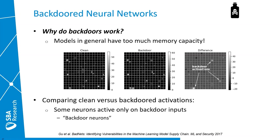Backdoors work due to a peculiarity of many machine learning models: they have simply too much memory capacity and are able to pick up too many details, sometimes even unimportant ones. In a neural network, comparing activations on clean versus backdoor samples reveals that some dedicated neurons specifically pick up the embedded pattern — for example a yellow post-it. These neurons overfit to that specific unimportant detail, memorizing it, and when this detail appears again on another sample these neurons activate and trigger the wrong classification.